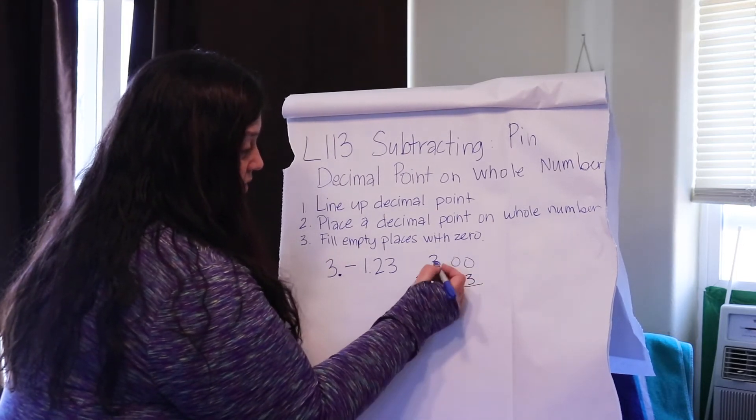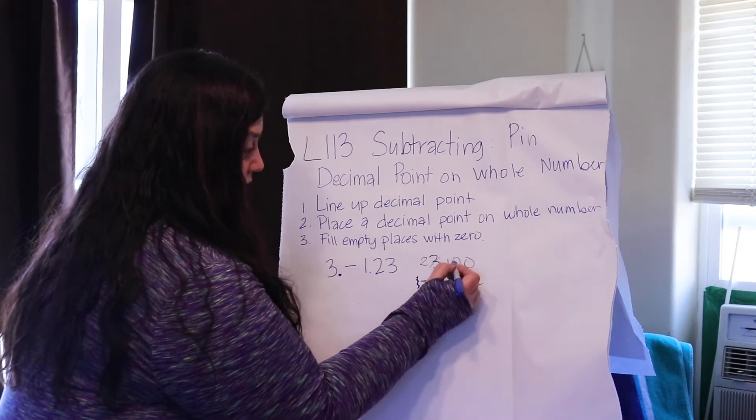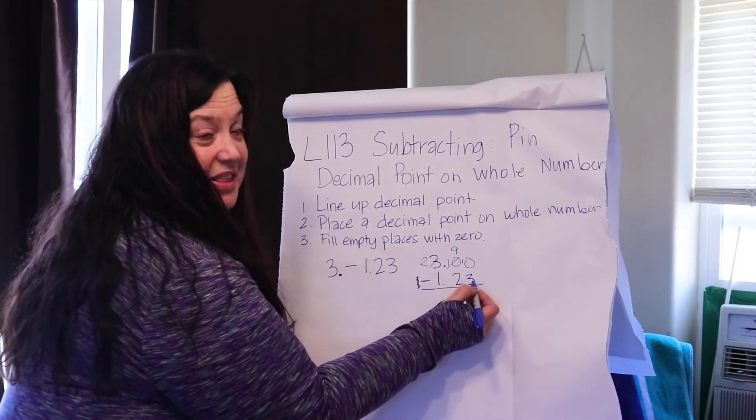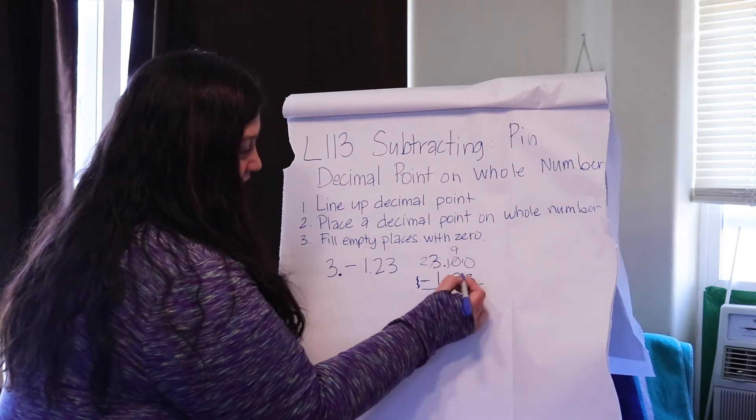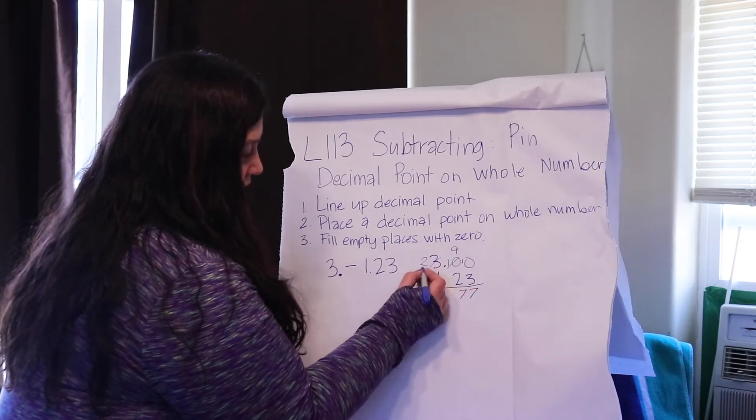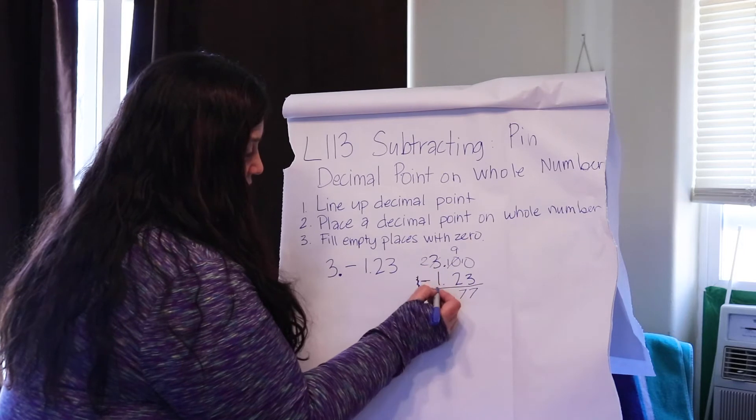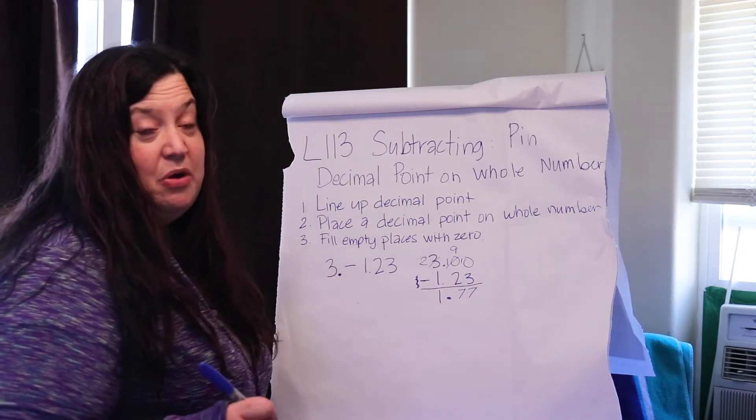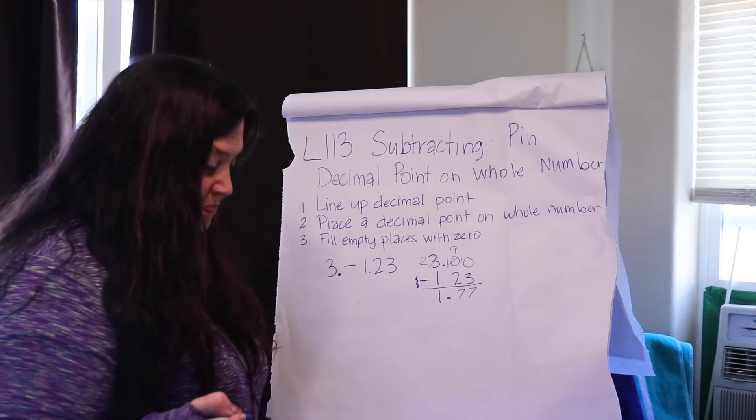Now, how do we do this? Yeah, we have to go all the way over here, and now we can do 10 take away 3 is 7, 9 take away 2 is 7, place our decimal point, 2 minus 1 is 1, and we get 1.77, or 1 and 77 hundredths.